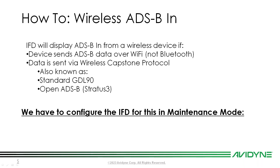If you want to learn how to get wireless ADS-B from the Stratus onto the IFD, stick around. With AVIOS 10.3, the IFD can display wireless traffic and weather. The IFD will show ADS-B in from any wireless device that sends ADS-B data over Wi-Fi — not Bluetooth — and if that data is sent via wireless Capstone protocol. You may hear different names for this: some call it standard GDL90, and Appareo calls it Open ADS-B — it's the same thing.